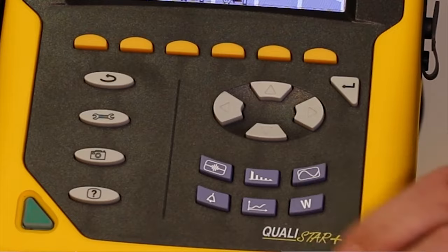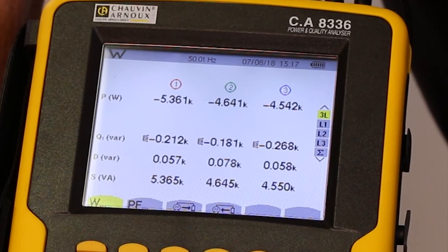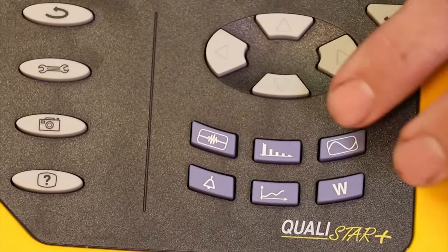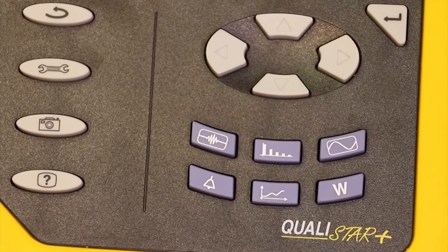Here we have the watt mode key. Pushing this displays the instantaneous power. And here, on the fast keys, power factor. Pressing the sine wave takes us back to live recording.